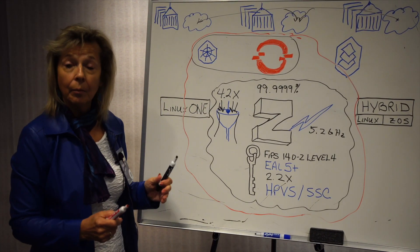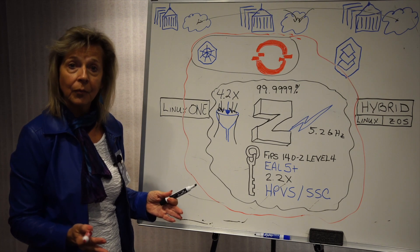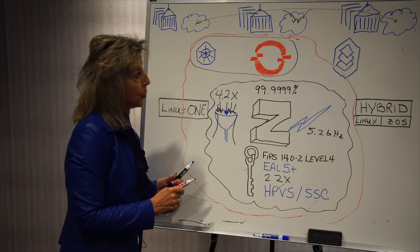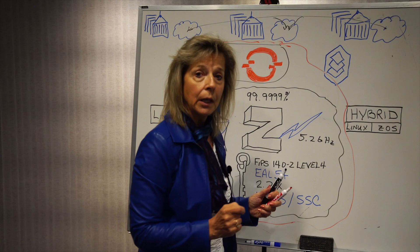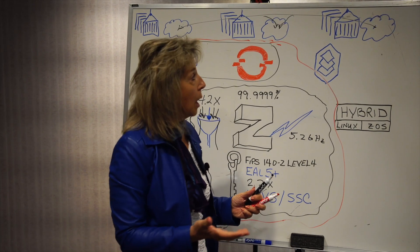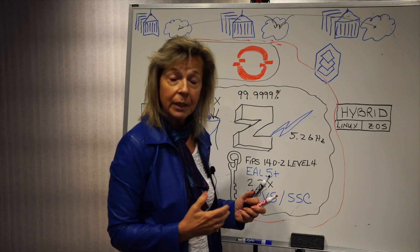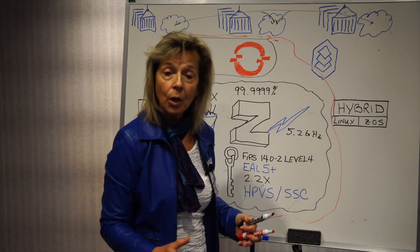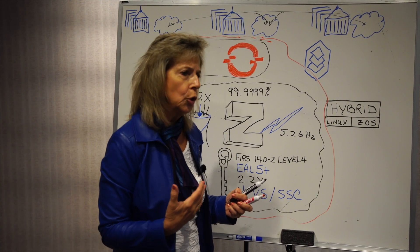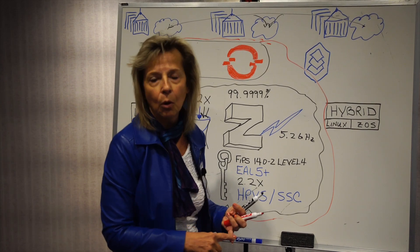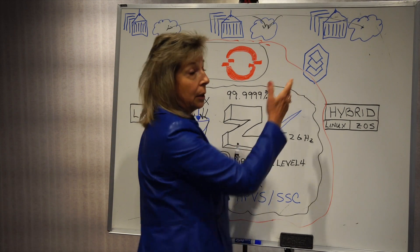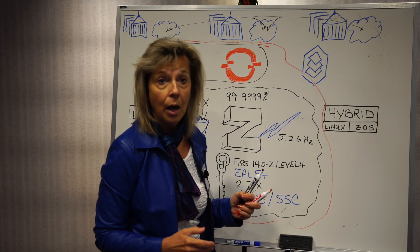IBM purchased Red Hat, seeing the advantages it offered. As a result, they implemented something called IBM Cloud Packs. An IBM Cloud Pack is essentially IBM containerizing their middleware. One of the first Cloud Packs is the Cloud Pack for Applications, which includes middleware products such as mobile and WebSphere Liberty.